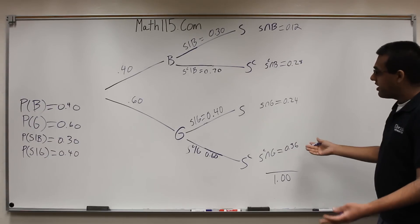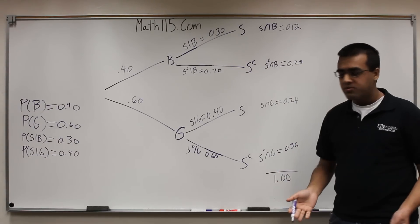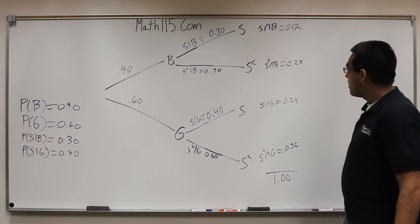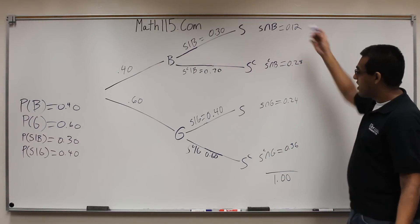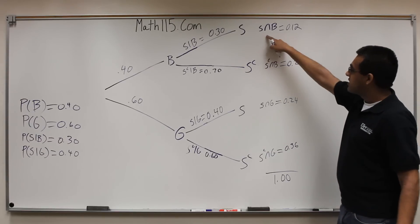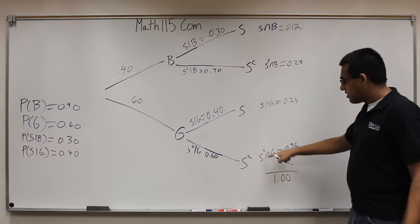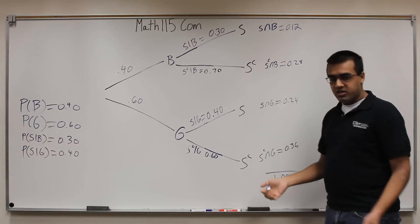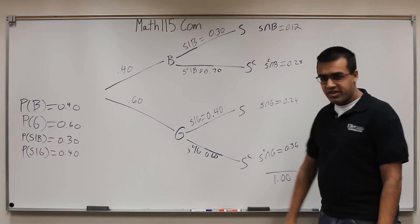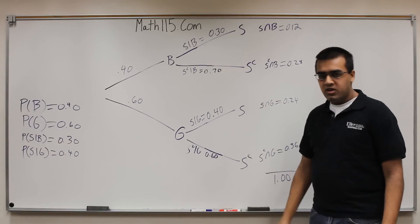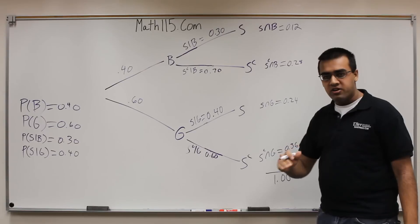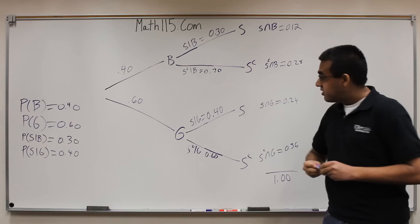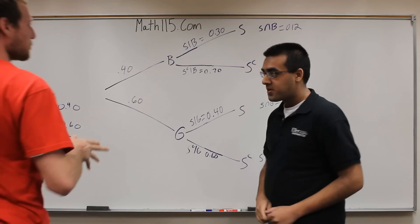This is how you solve a basic tree diagram problem — probably the most basic of the problems you can expect to see. But now you can answer any question. If they ask what is S intersect B or S complement intersect G, you already know how to solve them. It's always a good idea to solve everything in a tree diagram when presented with this type of problem, because often these questions will have multi-part questions asking different things about the same tree diagram. Let's take this one step further, though.